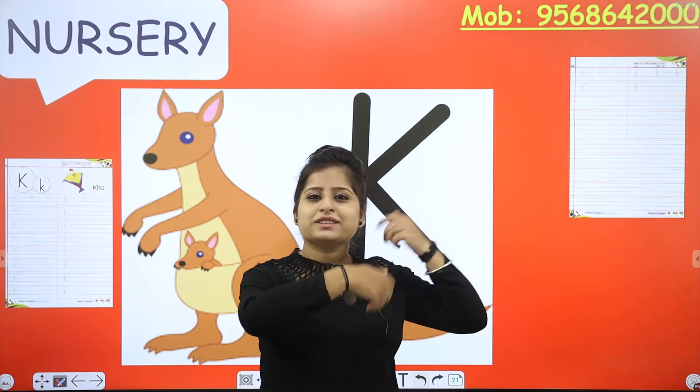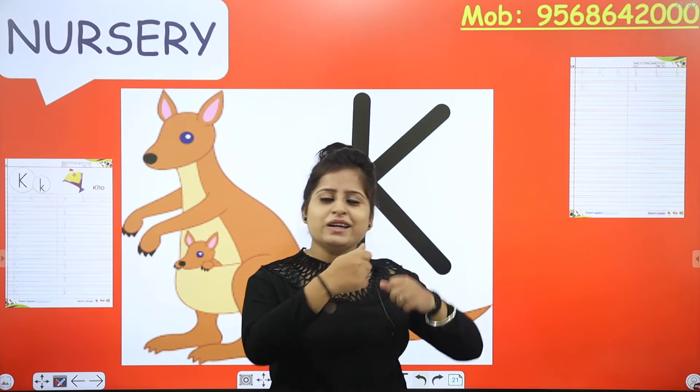Give me some more examples that start from K. K for kite, K for kangaroo — already done. K for king. Think! K for kangaroo, K for kite, K for king...